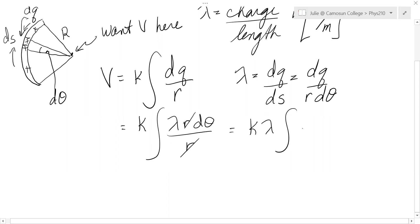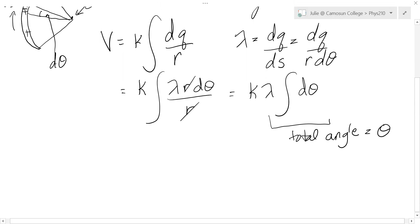So you get k lambda, the integral of d theta. Well, integrating all the d thetas, this is just the total angle subscribed by that line of charge. And so we'll just call that theta. And so the voltage due to any arc of charge is just k lambda theta.